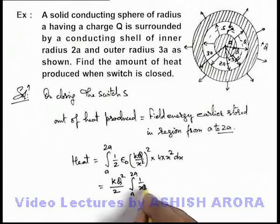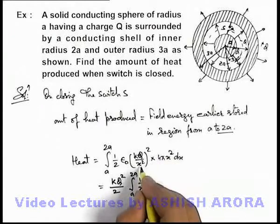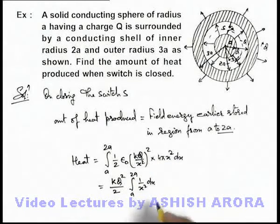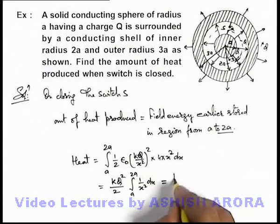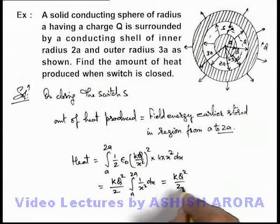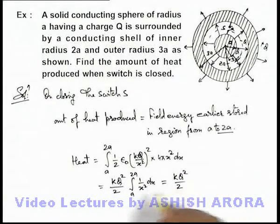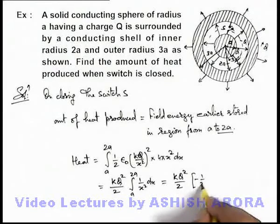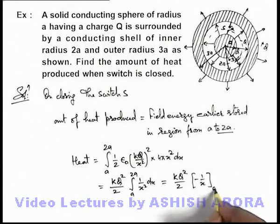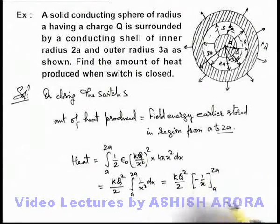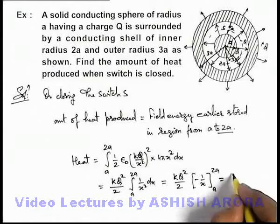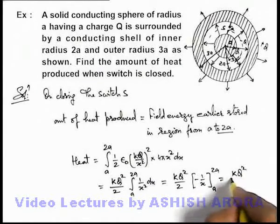The integral of 1 by x squared is minus 1 by x. We apply limits from a to 2a, and on substituting limits, finally we are getting the result as kQ squared by 4a. That will be the answer to this problem.